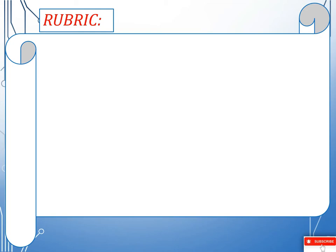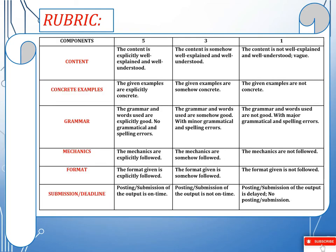Follow the rubric thoroughly. Here are the components: Content — the content is explicitly well explained and well understood. Concrete examples — the given examples are explicitly concrete. Grammar — the grammar and words used are explicitly good, with no grammatical or spelling errors. Mechanics — the mechanics are explicitly followed. Format — the format given is explicitly followed. Submission or deadline — posting and submission of the output is on time. Please be diligent when it comes to submission.